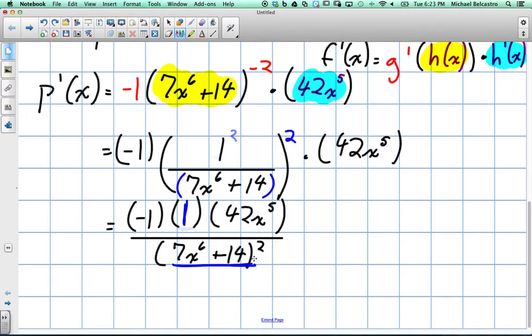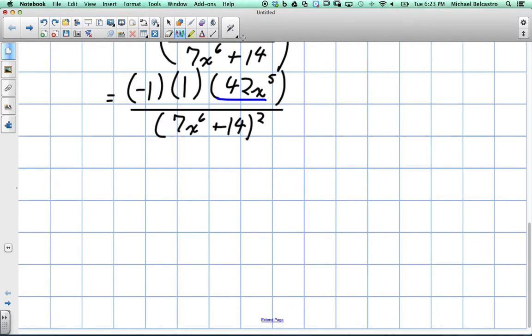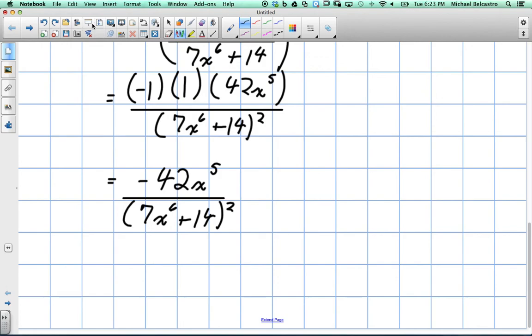So now on top I just have three terms. I can actually multiply them across to simplify. So negative 1 times 1 is going to be negative 1, and then negative 1 times 42x to the power of 5 is going to just be negative 42x to the power of 5. So this is going to be equal to negative 42x to the power of 5 divided by, and again there's lots of stuff we could do at the bottom, but this is a pretty simplified version like this. We'll probably keep it like this.